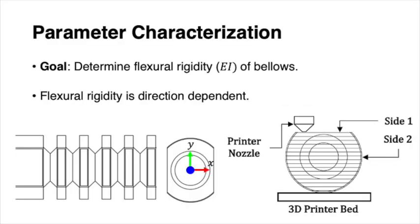In order to develop accurate kinematic models and predict concentric tube manipulator performance, it is necessary to calibrate the effective flexural properties of a bellows design. For revolute and helical bellows, flexural rigidity is direction dependent.